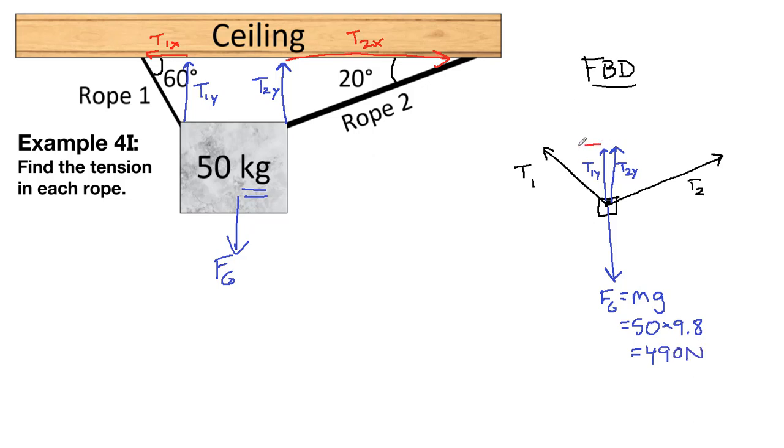When we switch to the X components, this is T1X, and this is T2X. The angles themselves, this is over here, the 20 degrees. So, this will be cosine, this will be sine, and here are the 60 degrees. This will be cosine, the X component, and sine, the Y component.